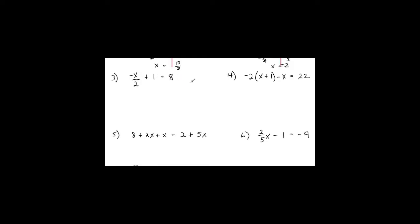Number 3 — hopefully you notice it's already a two-step equation. Going through the steps: no distributive property. On the left I have a variable term that I can't combine with the number term, and on the right just a number term. No variables on both sides. So opposite of the number: add negative 1 on both sides, giving negative x over 2 equals 7.